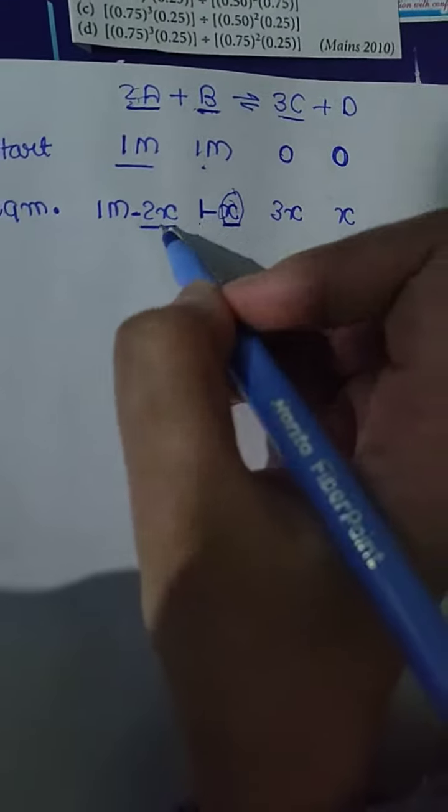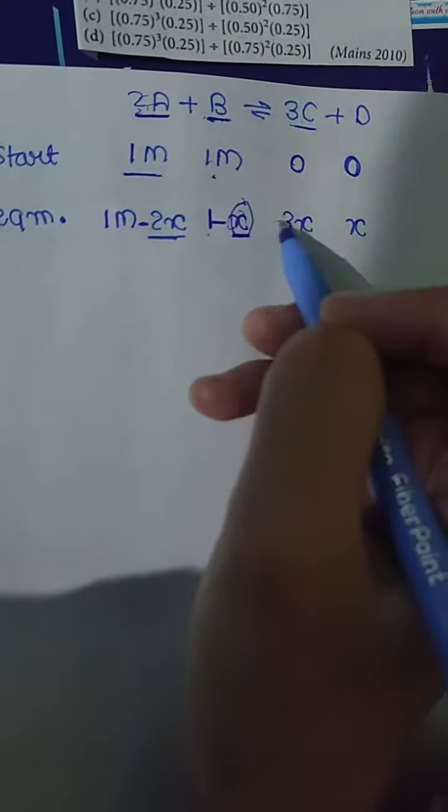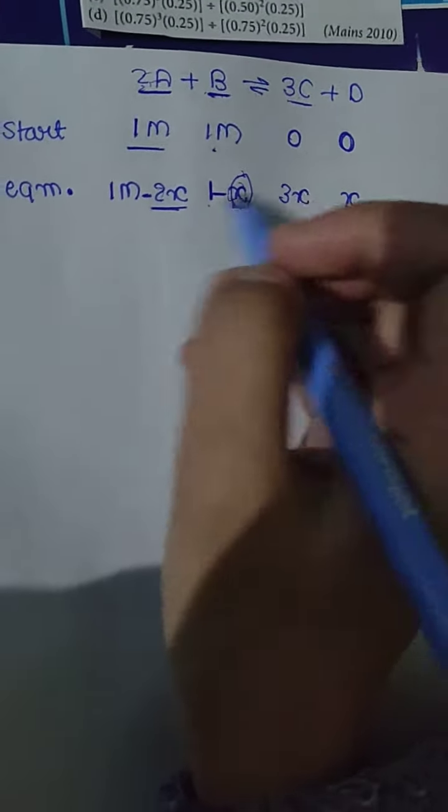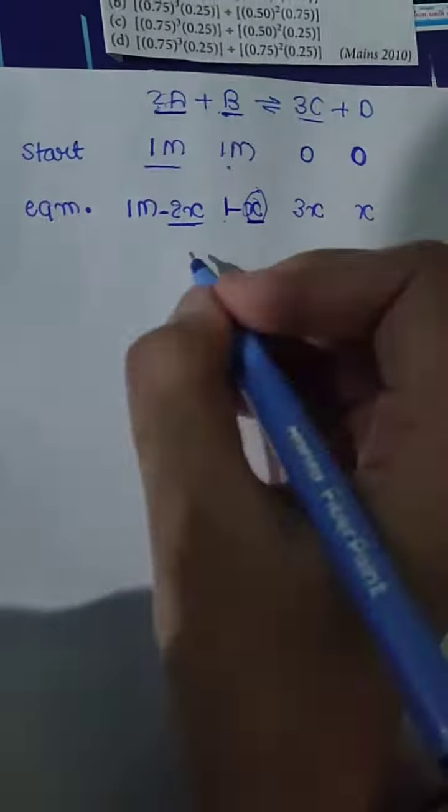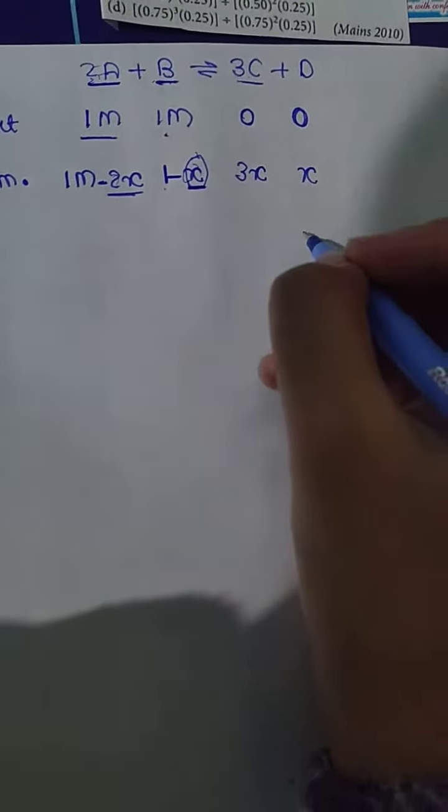We can also compare: 2 moles give 3 moles, so 2x gives 3x; 2 moles give 1 mole, so 2x gives x mole. We can calculate equilibrium concentrations this way. The value of Kc is unknown, but D's concentration is given as 0.25, which means x equals 0.25 molar.